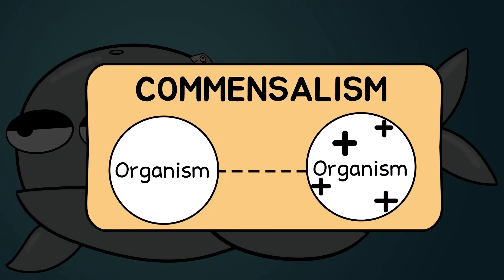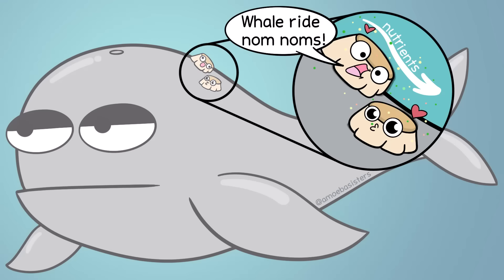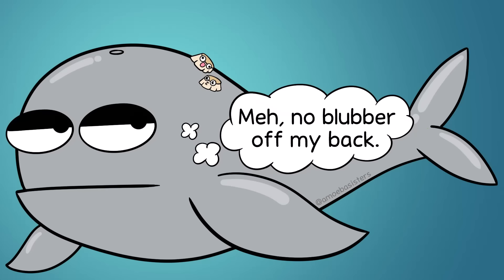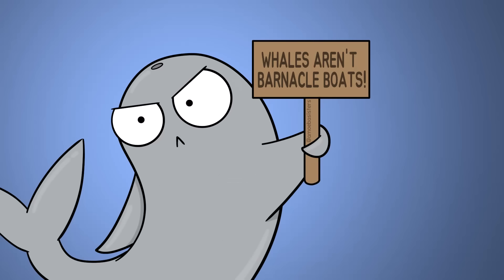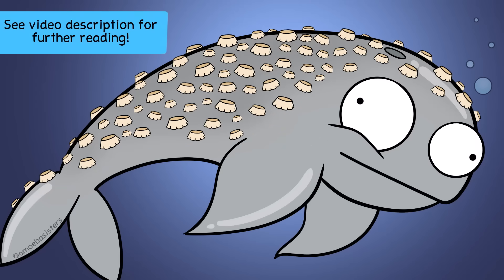Finally, there is commensalism — where one organism benefits and another is neither helped nor harmed. The popular example is a barnacle on a whale: the barnacle gets access to many nutrients on its free whale ride, while the whale is neither helped nor harmed. What's interesting is that with commensalism it could depend — there are instances where a lot of barnacles could be helpful or harmful to whales depending on different factors.